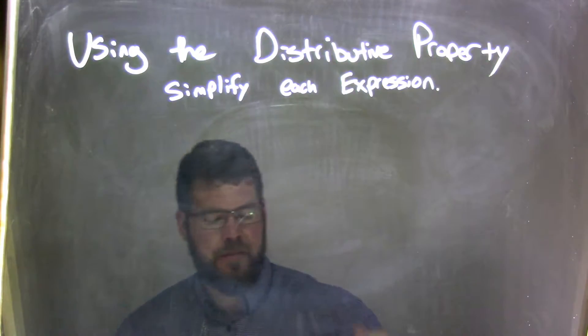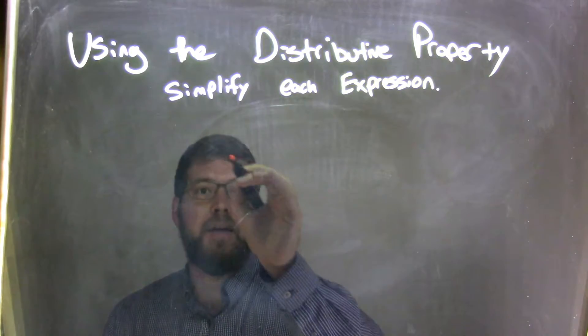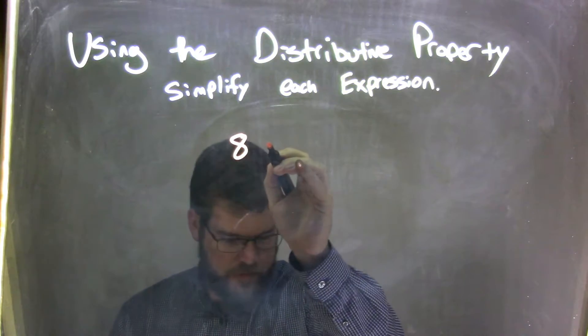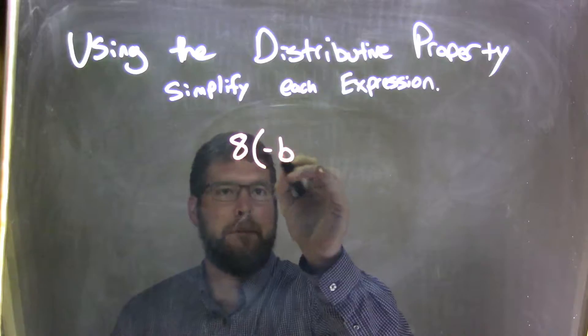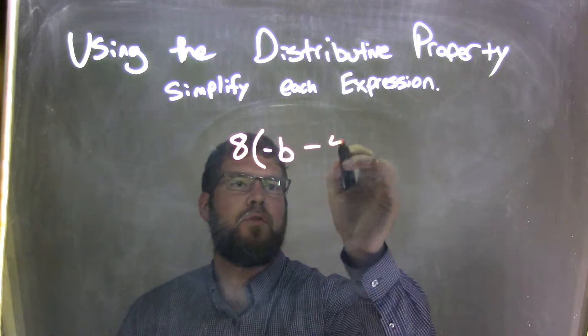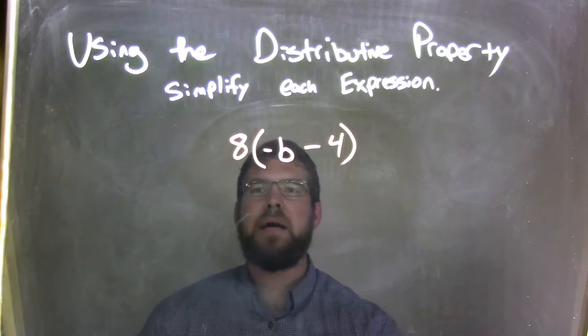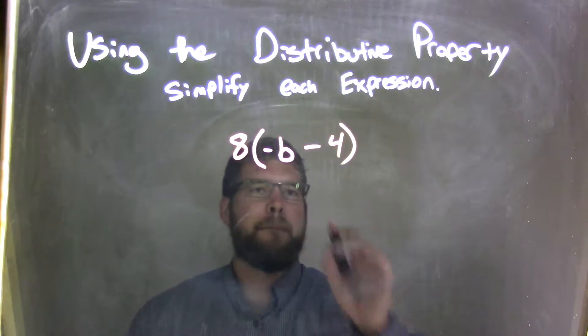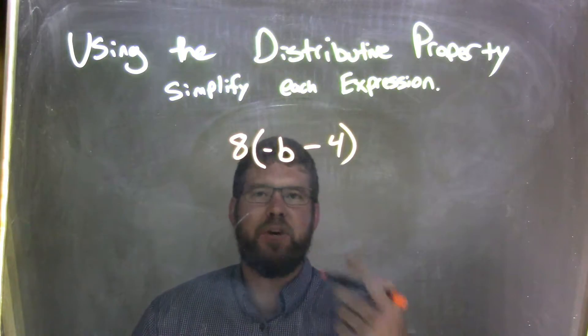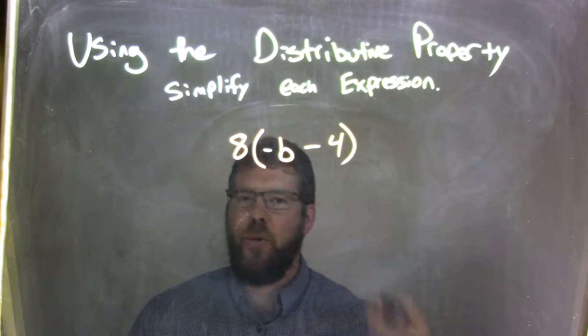If I was given this expression, 8 times negative b minus 4, and I wanted to simplify that. Well, negative b minus 4 are not like terms, even though they're inside the parentheses, so we can't simplify.